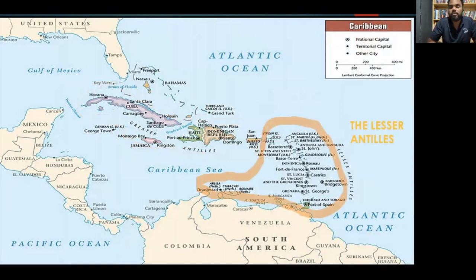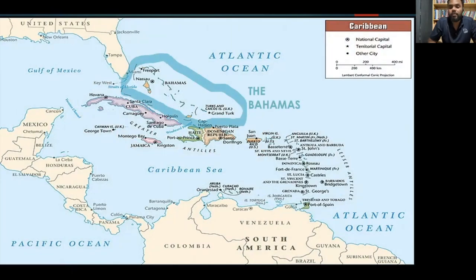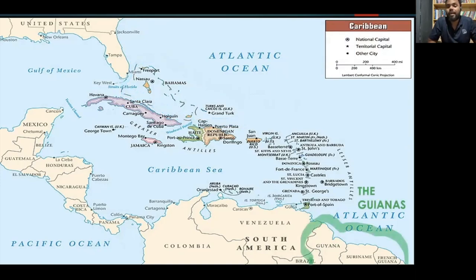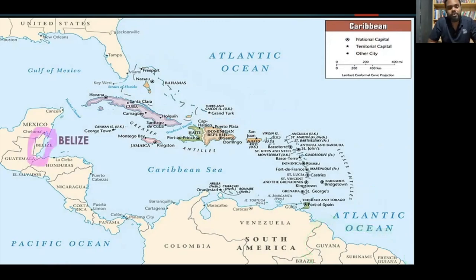The second terrestrial sub-region is called the Lesser Antilles, which run from the Virgin Islands in the north to Trinidad and Tobago in the south, Barbados in the east to the ABC Islands — Aruba, Bonaire, and Curaçao — in the west. The third sub-region is the Bahamas in the north. The fourth is the Guyanas — the mainland territories of Guyana (historically British Guyana), Suriname (Dutch Guyana), and French Guyana. The fifth and final sub-region is Belize, located in Central America, which in this lesson I will also refer to as Meso-America.